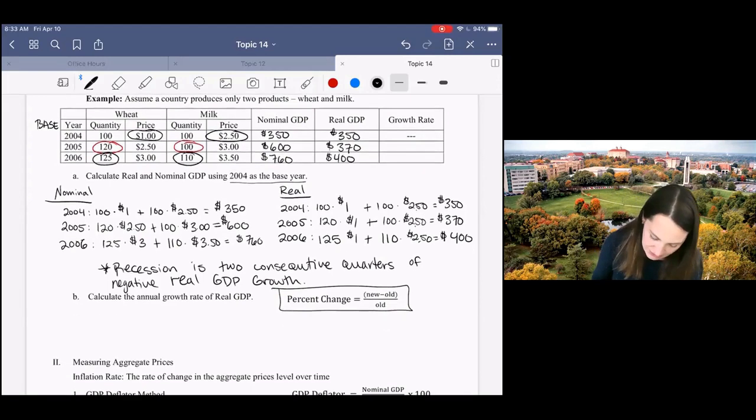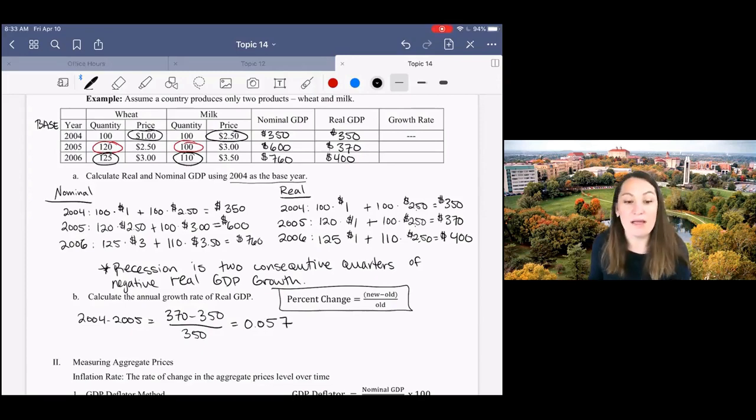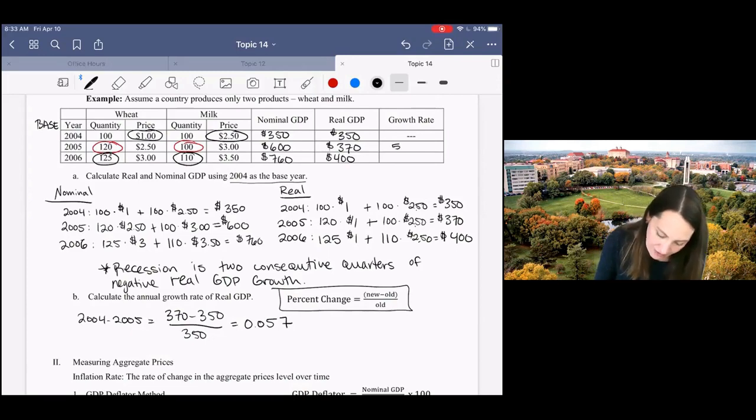All we need to do here to calculate the growth rate between 2004 and 2005 is to do new minus old over old for our real GDP calculation. And when you plug that into your calculator, it's going to give you 0.057, which is a growth rate of 5.7%.